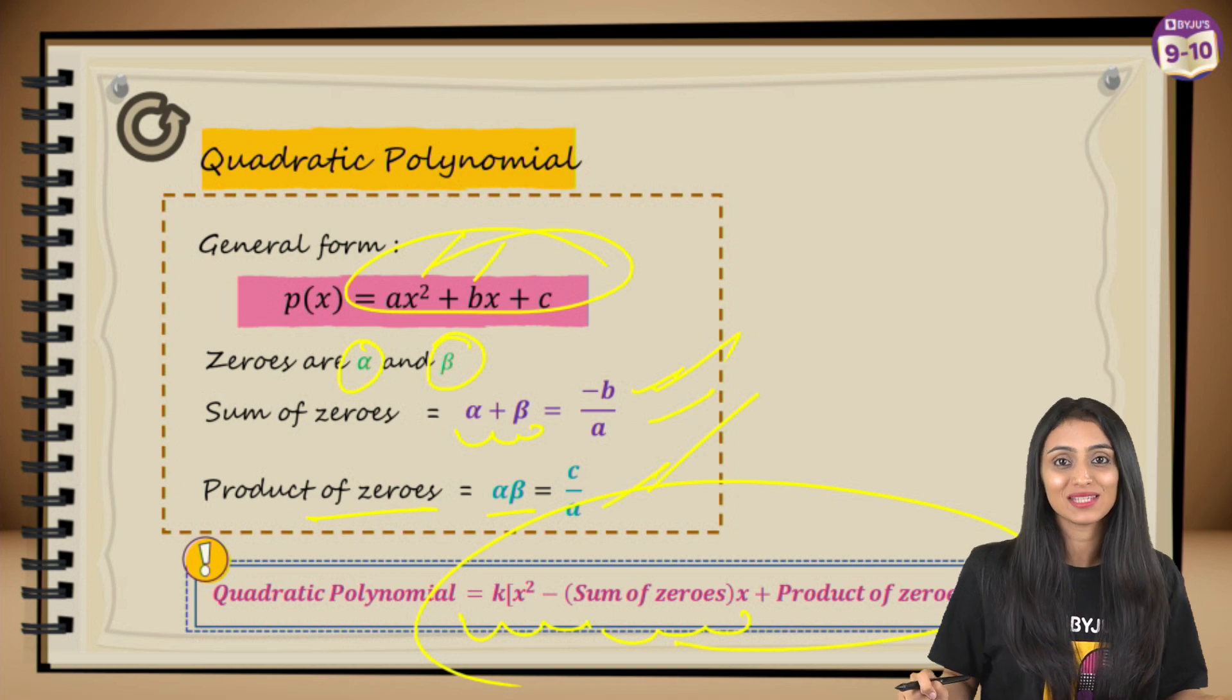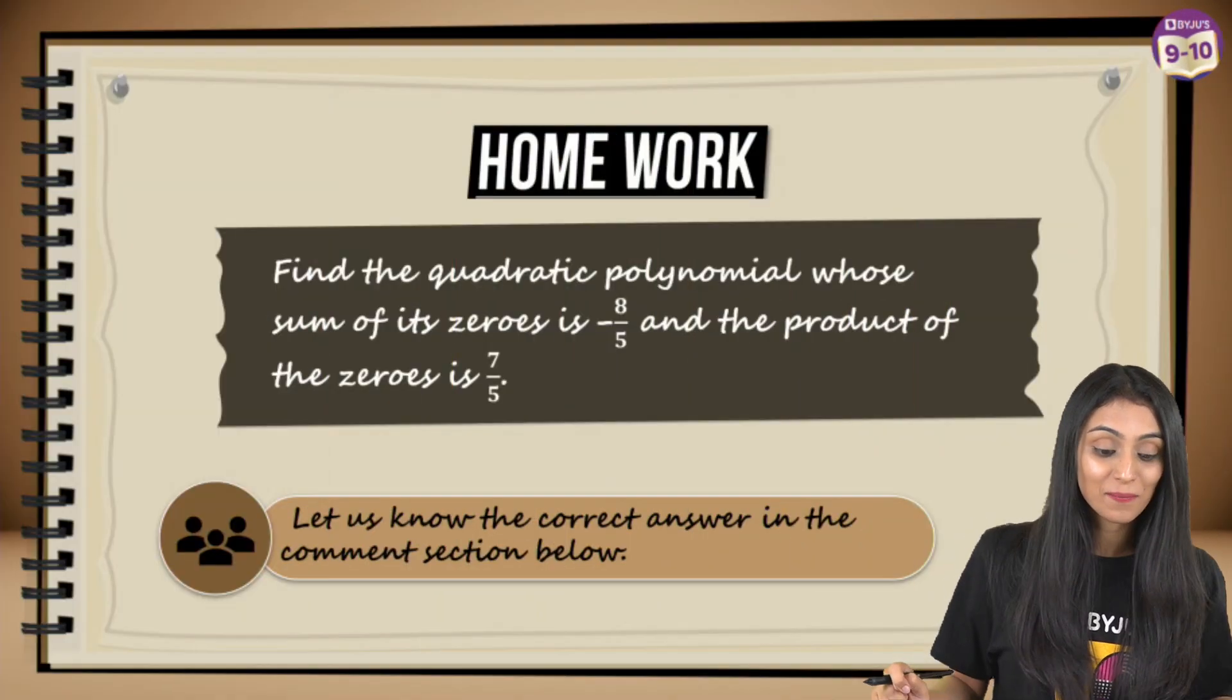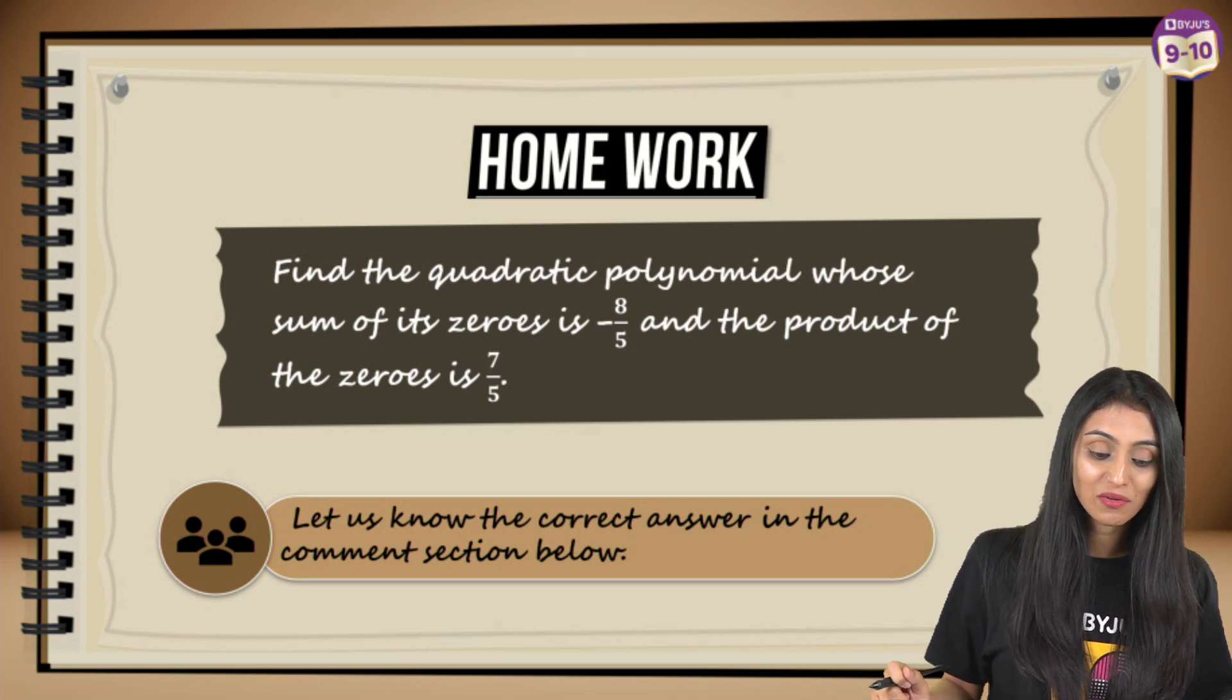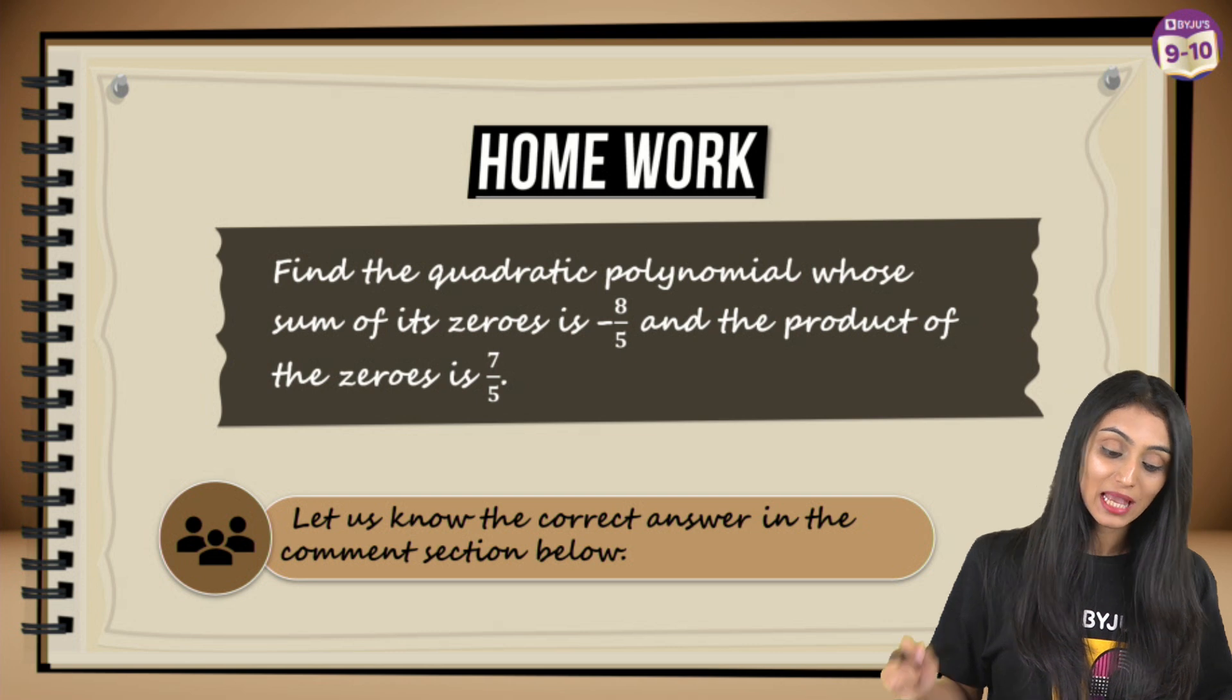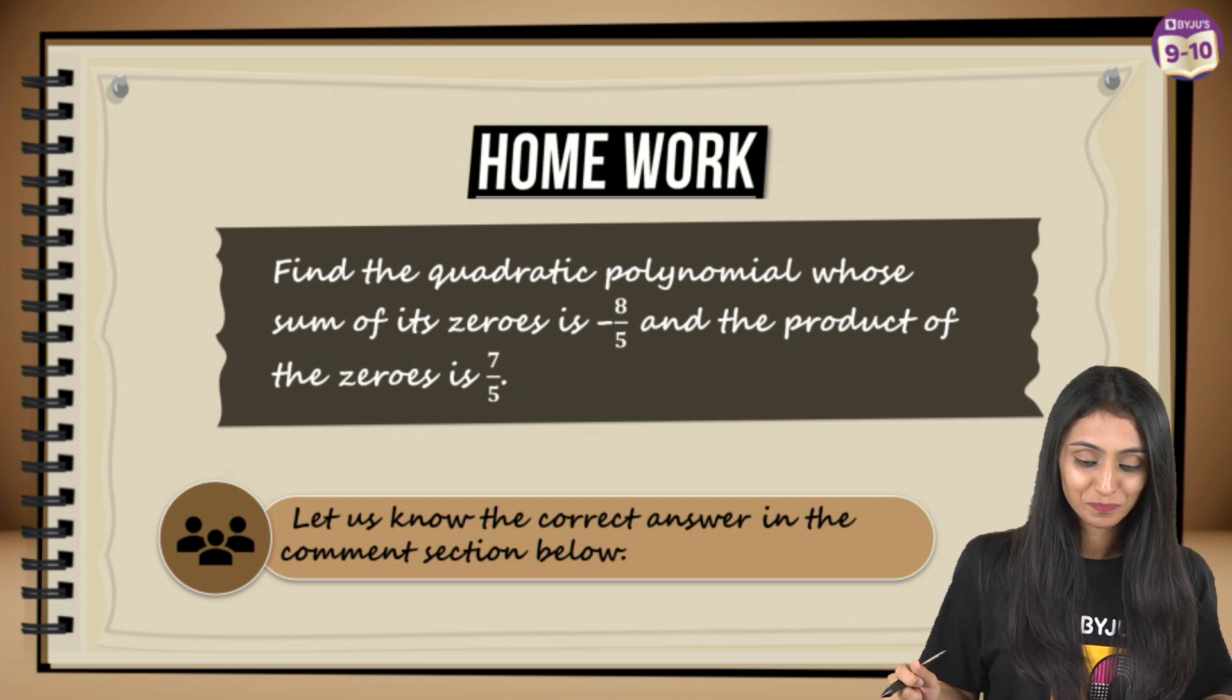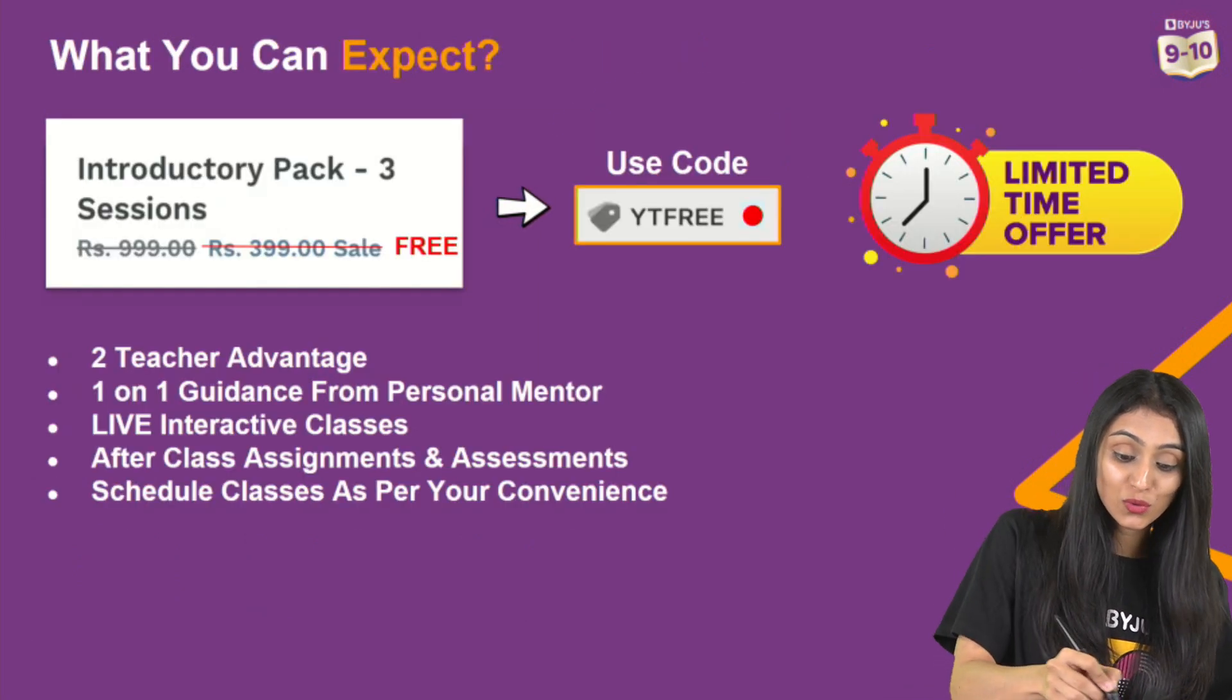There is a question you can try out after this class: Find the quadratic polynomial whose sum of its zeros is -8/5 and product of zeros is 7/5. You can let us know the correct answer in the comment section below. And just a reminder: the link for this is given in the description below. Do not forget to use the code YTFREE.